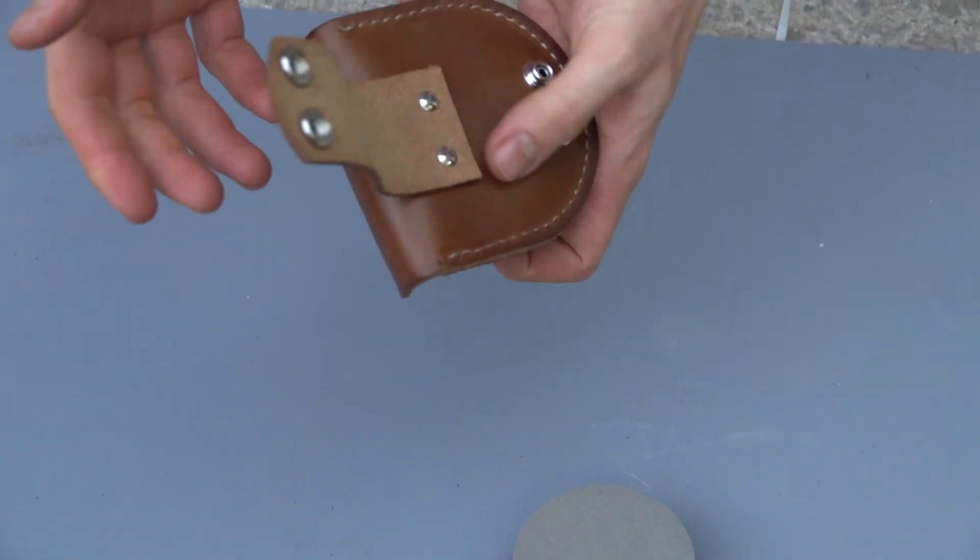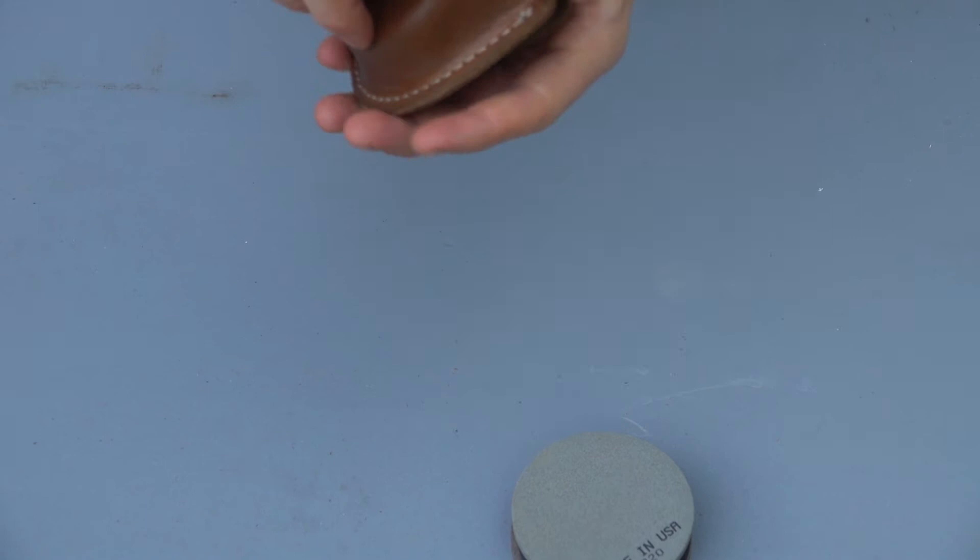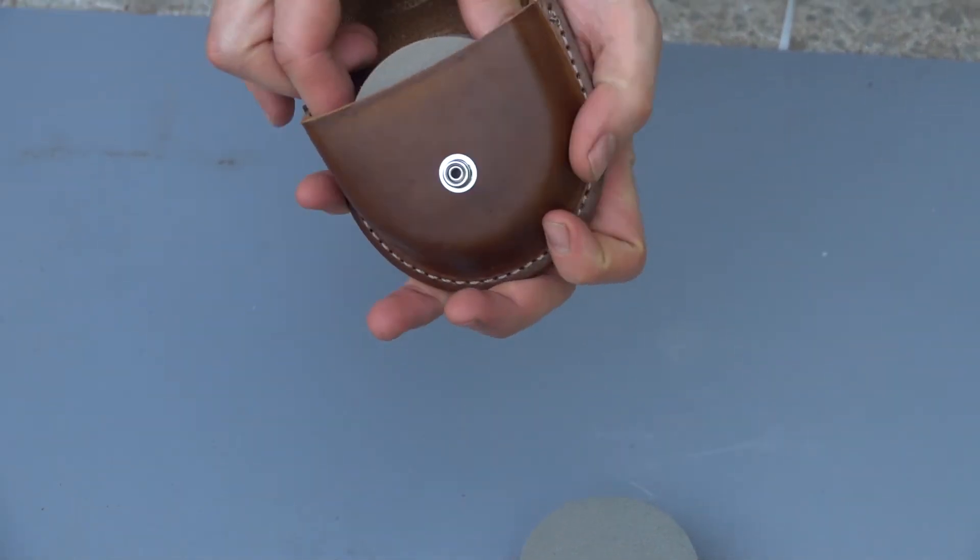This has snaps on the back so you can take it on and off your belt without taking your belt off. Snaps back on, snap on the front so you don't lose it throughout the day even if you bend over.